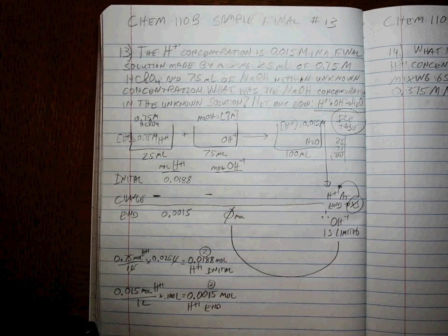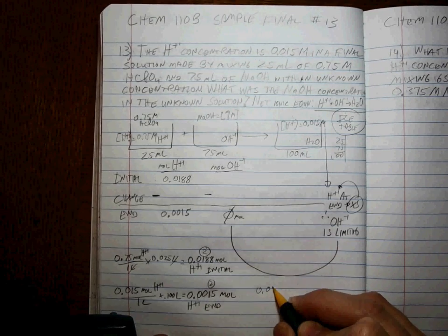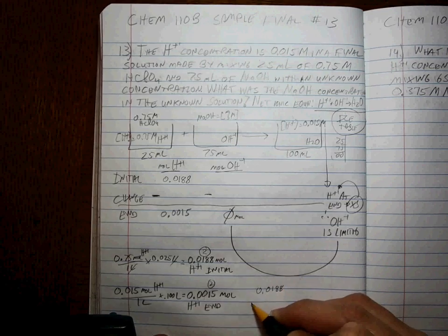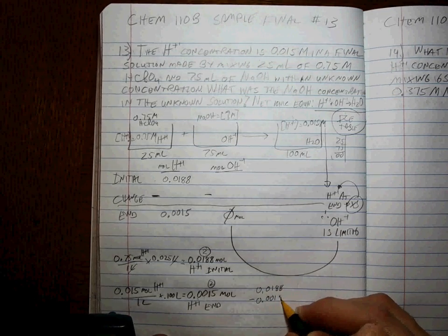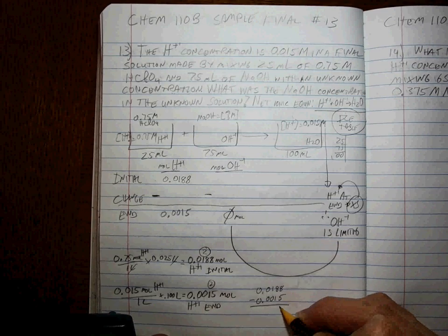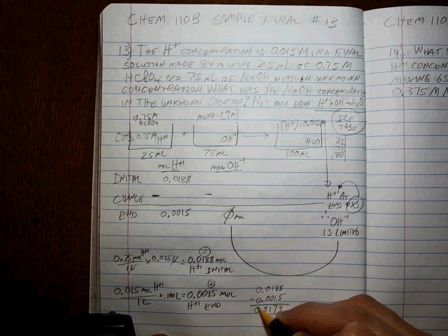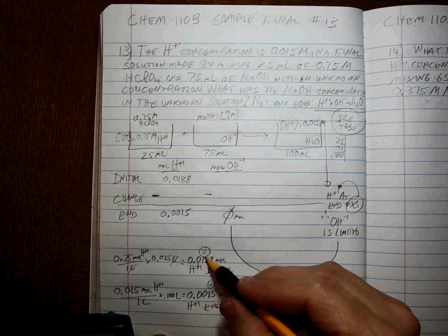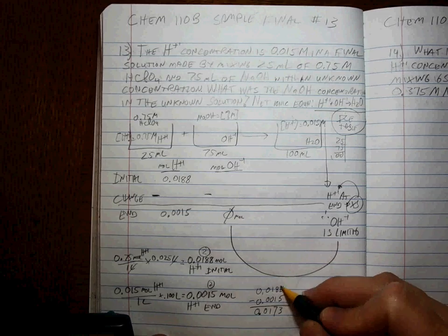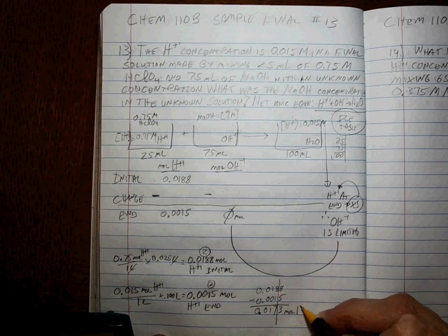We'll do this right here: 0.0188 minus 0.0015. That's 3, that's 7, that's 1. But this is two sig figs and this is two, which means we're drawing a line here. This is the moles of H+. That's your change, that's your reacted.